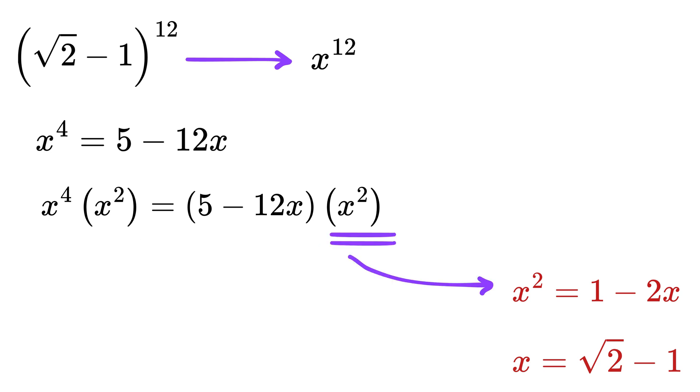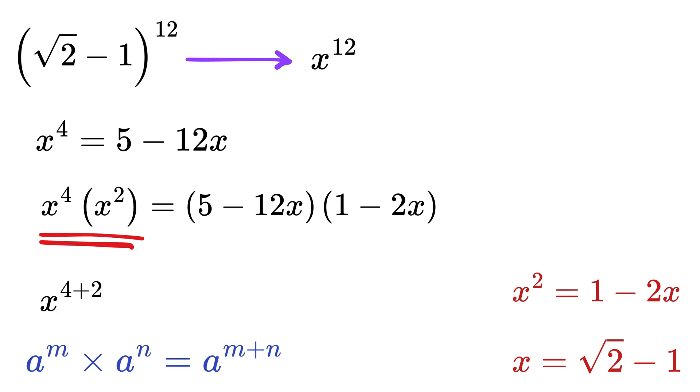Now let us multiply x^2 on both sides of the equation, but this x^2 will be the same as 1 - 2x. So write x^2 on this side, but here we will use x^2 as 1 - 2x. This will become x^6.